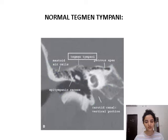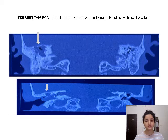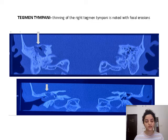Normal tegmen tympani: Tegmen tympani is a thin plate of bone which separates the middle ear cavity from the middle cranial fossa and is normally seen as shown in this image. Whereas in a case of cholesteatoma, there is thinning of tegmen tympani and focal erosions at places, whereas the left tegmen tympani is absolutely normal.